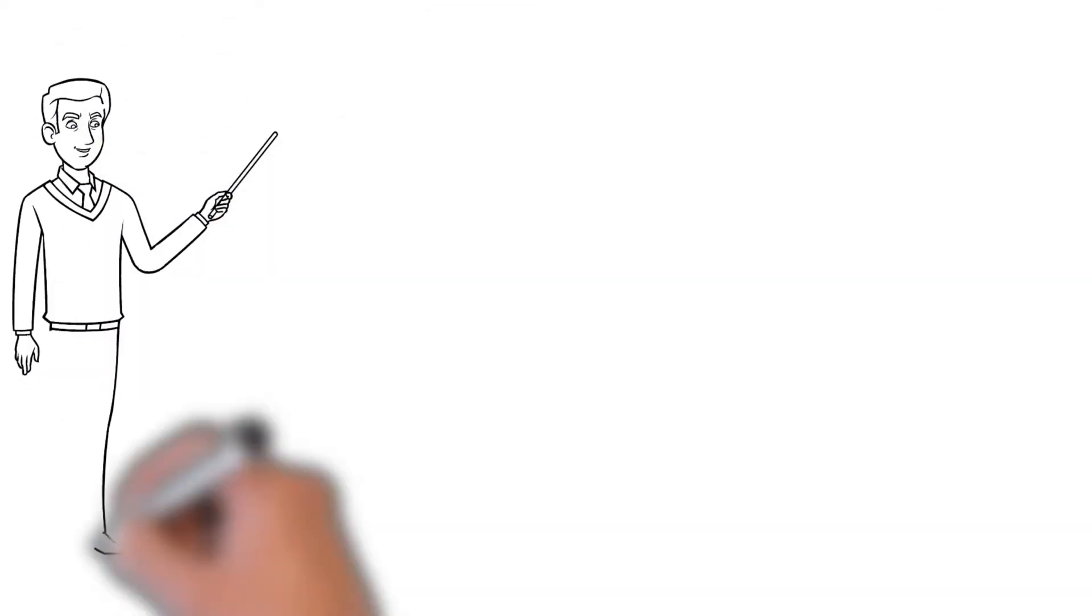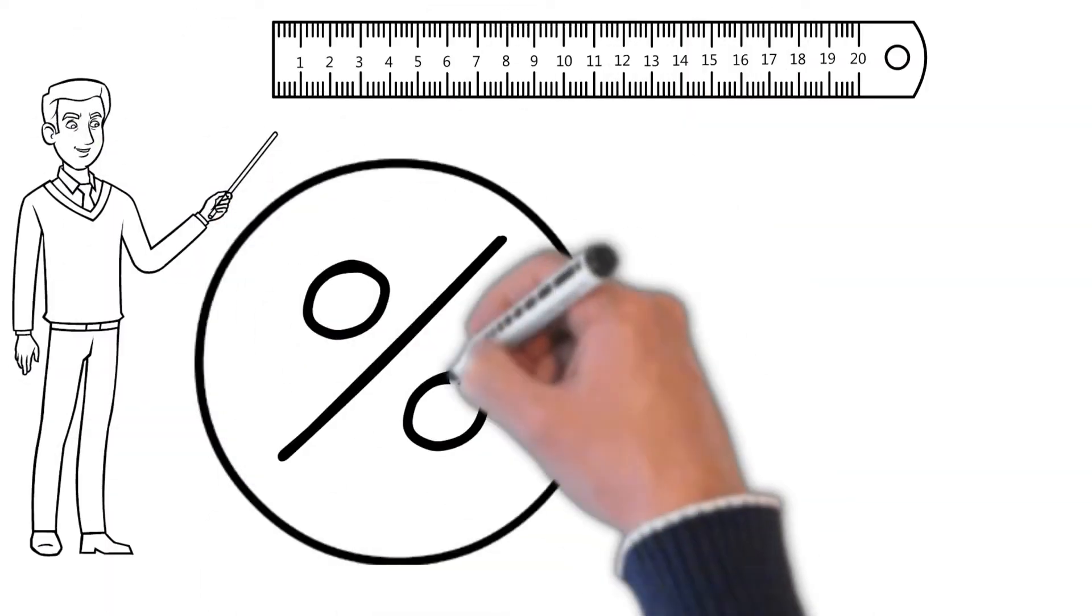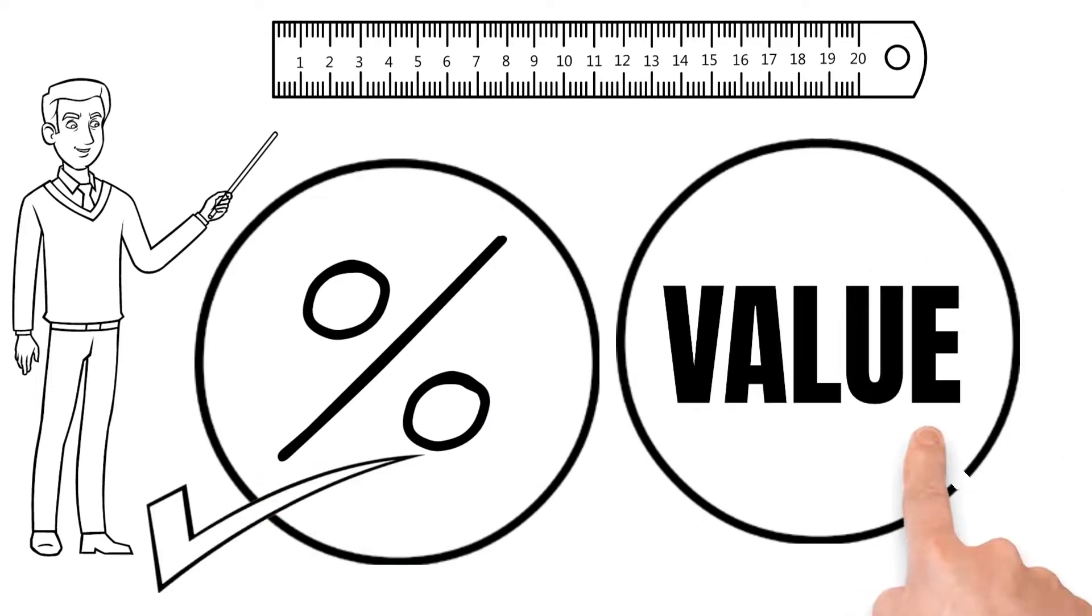Must be wondering, why do we measure month-over-month growth in percentage and not in absolute values?